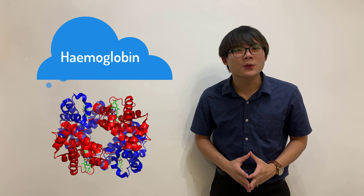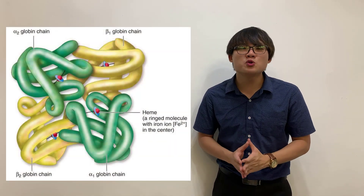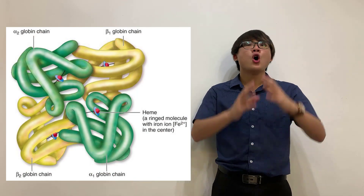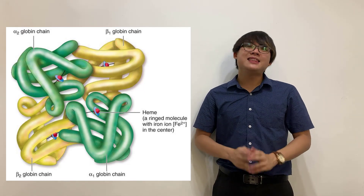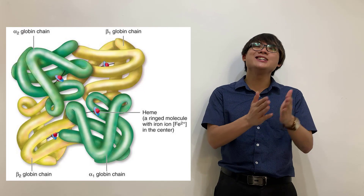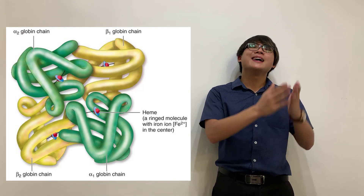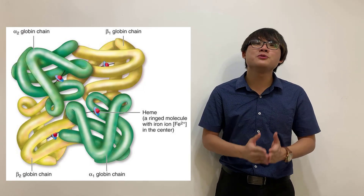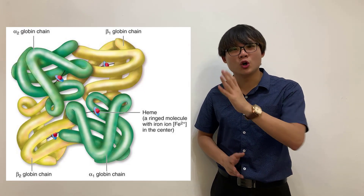Another thing that students must understand is that in red blood cells, we have red pigments known as hemoglobin. Hemoglobin is actually a quaternary protein, which means it is made up of four globin chains. And in each globin chain, there is a heme group that has an iron core in it. This iron core is where the oxygen molecules will bind, forming what we call oxyhemoglobin.